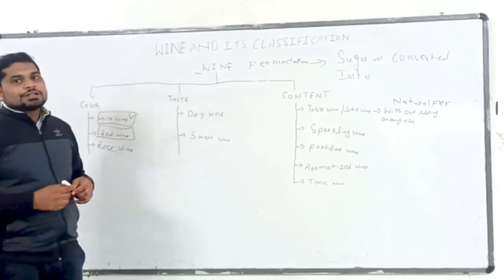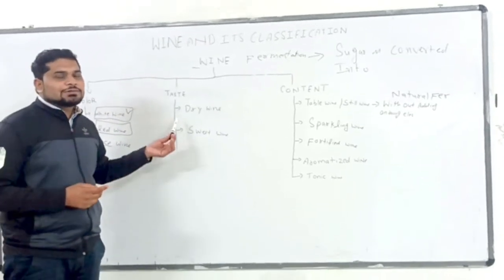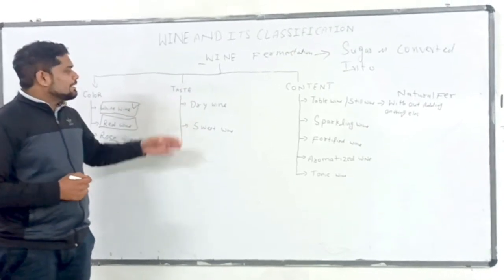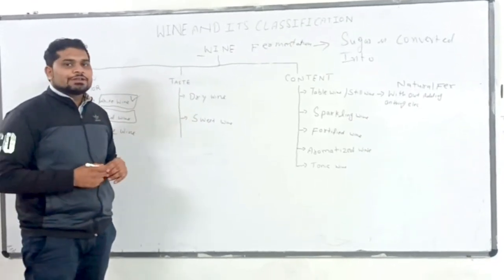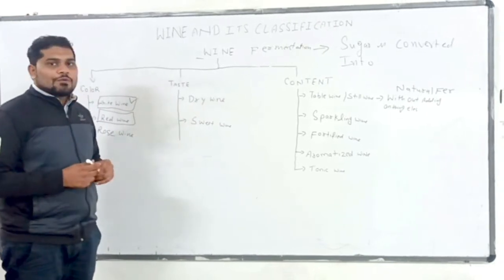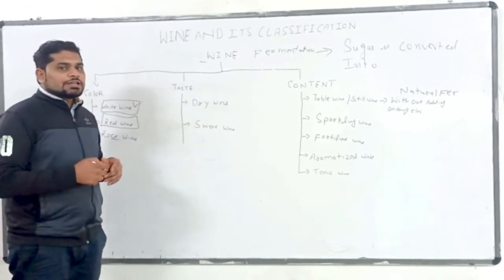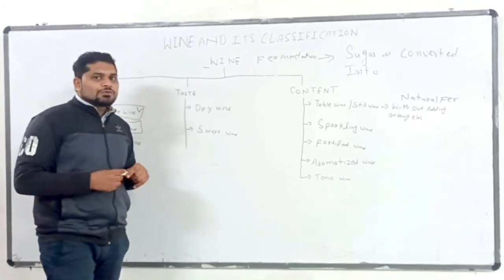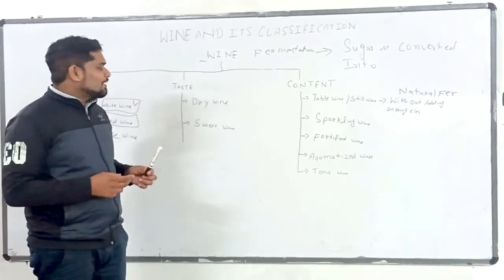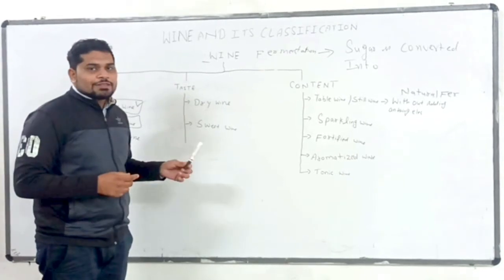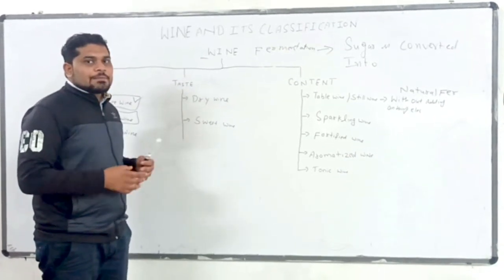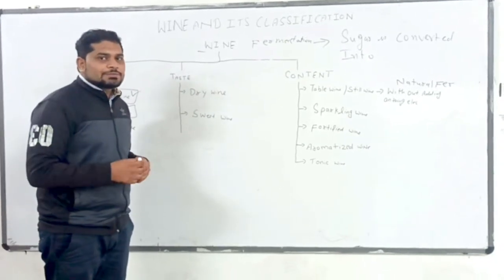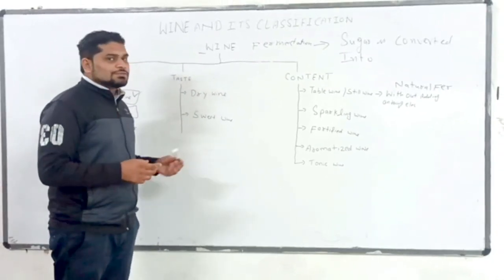If we talk about the taste, or we classify according to the taste, wine is two types: dry wine and sweet wine. Dry wine is when all the sugar is converted in fermentation process. Sweet wine is when there is some little amount of sugar left in the fermentation process.